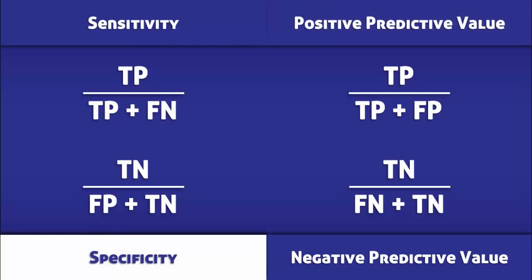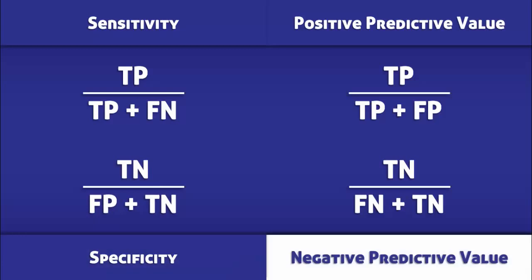Specificity is calculated by dividing the number of true negatives by the total number of people without the condition. The negative predictive value is calculated by dividing the number of true negatives by the total number of negative tests.